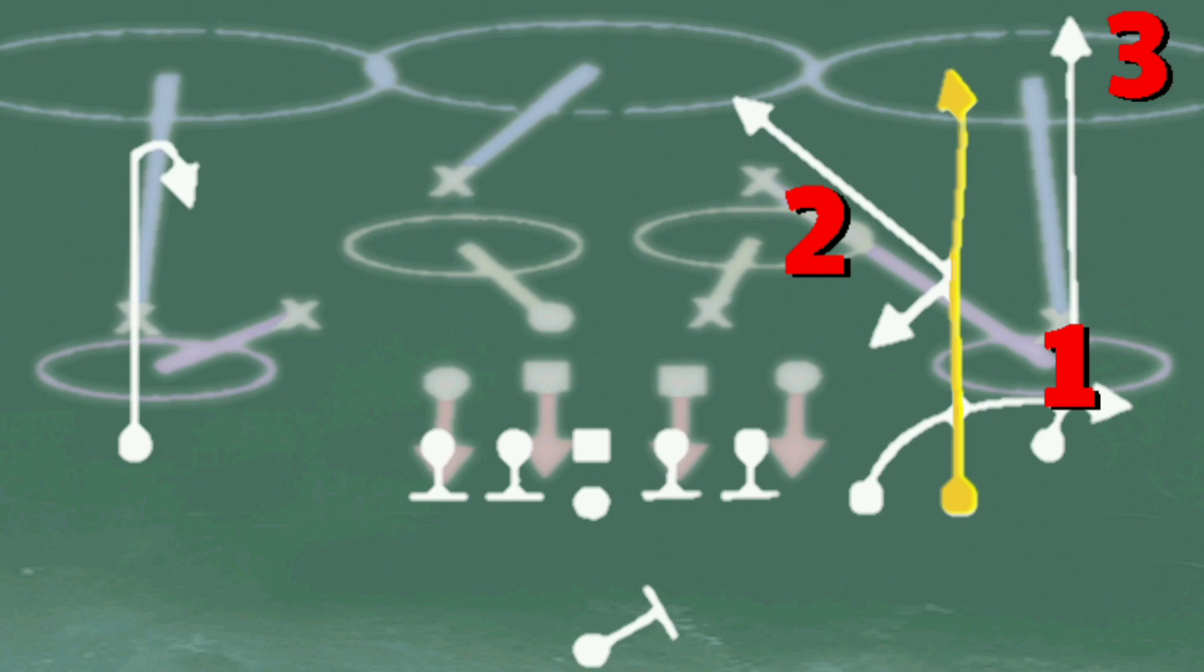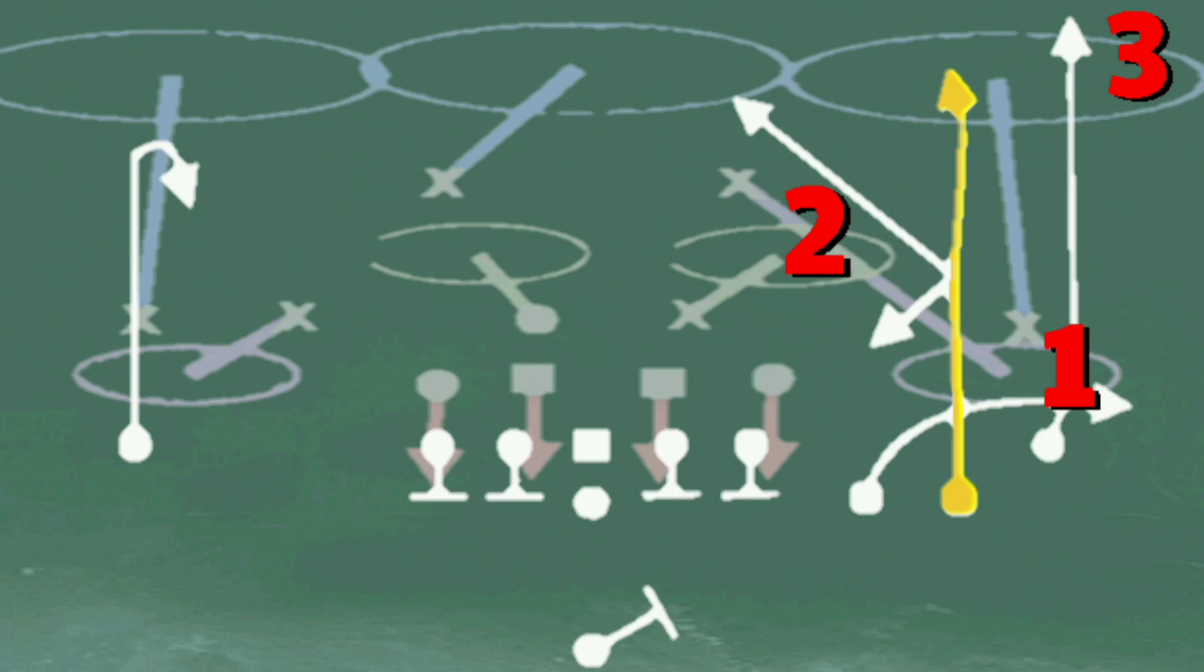First cover 3 match, you'll notice that it's the opposite. The seam flat defender is going to match to the flat, leaving the linebacker in the hook to match with the seam read. Look to hit the seam as soon as he hits open grass.